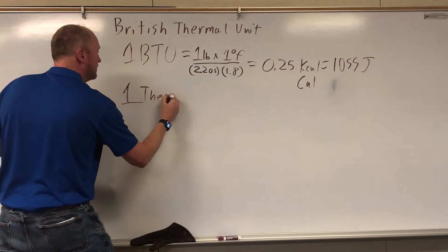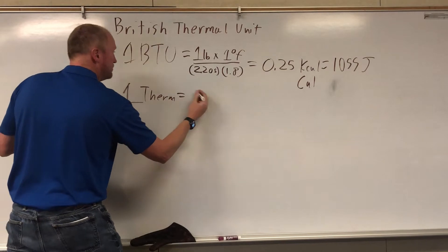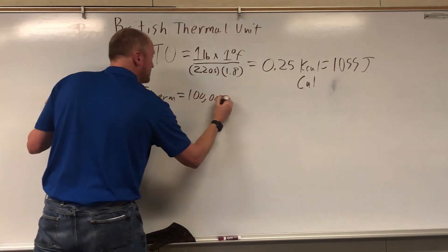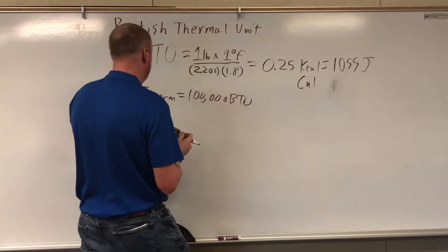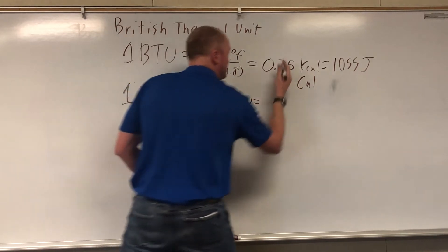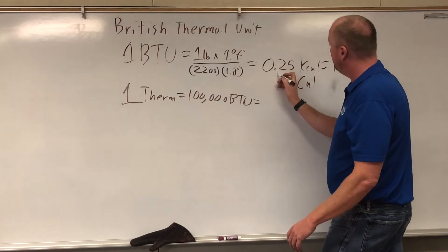One therm is equal to 100,000 BTUs. So basically, you just shift the decimal point over, shift over five places.